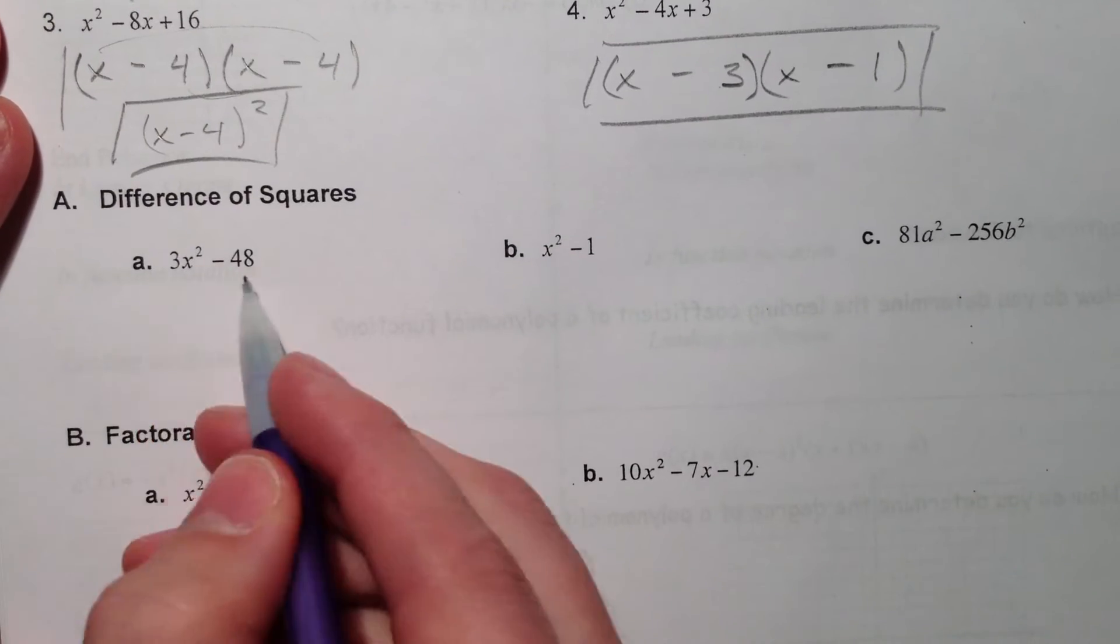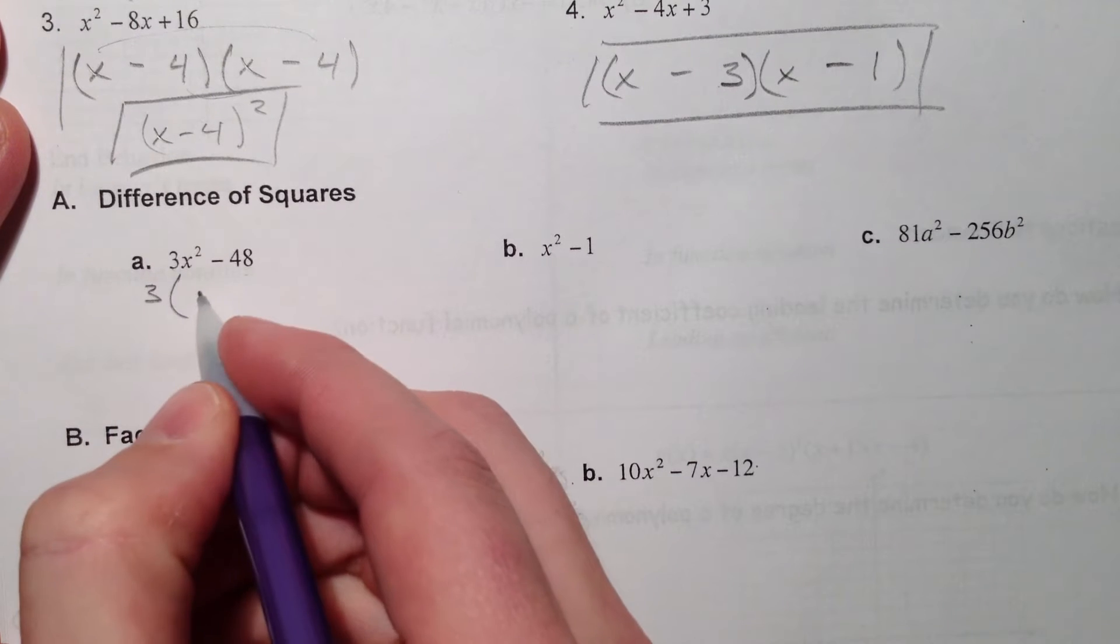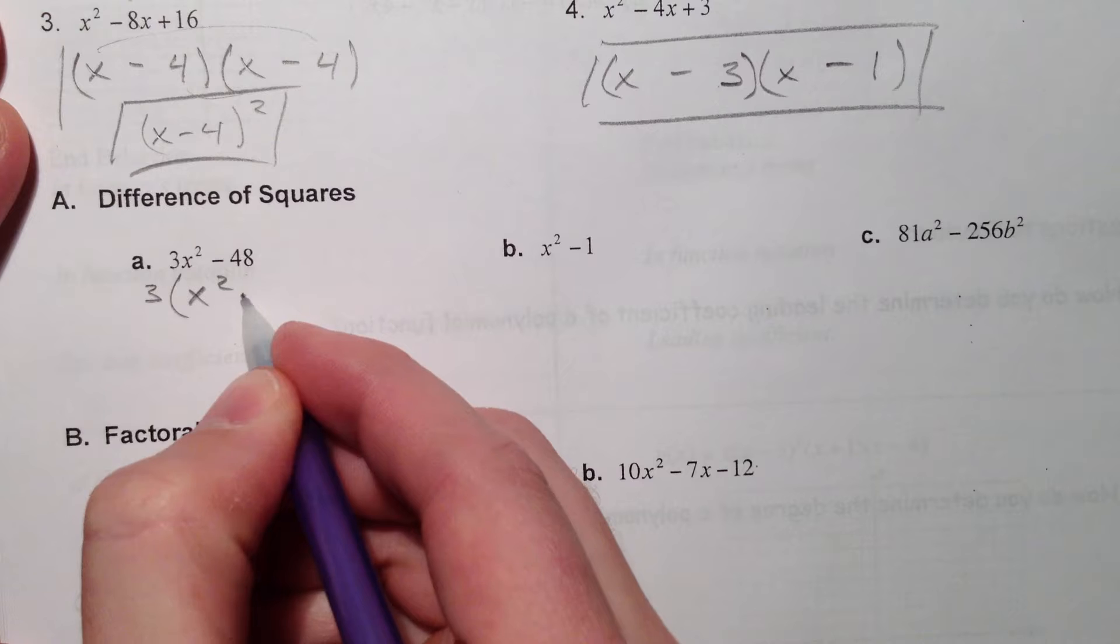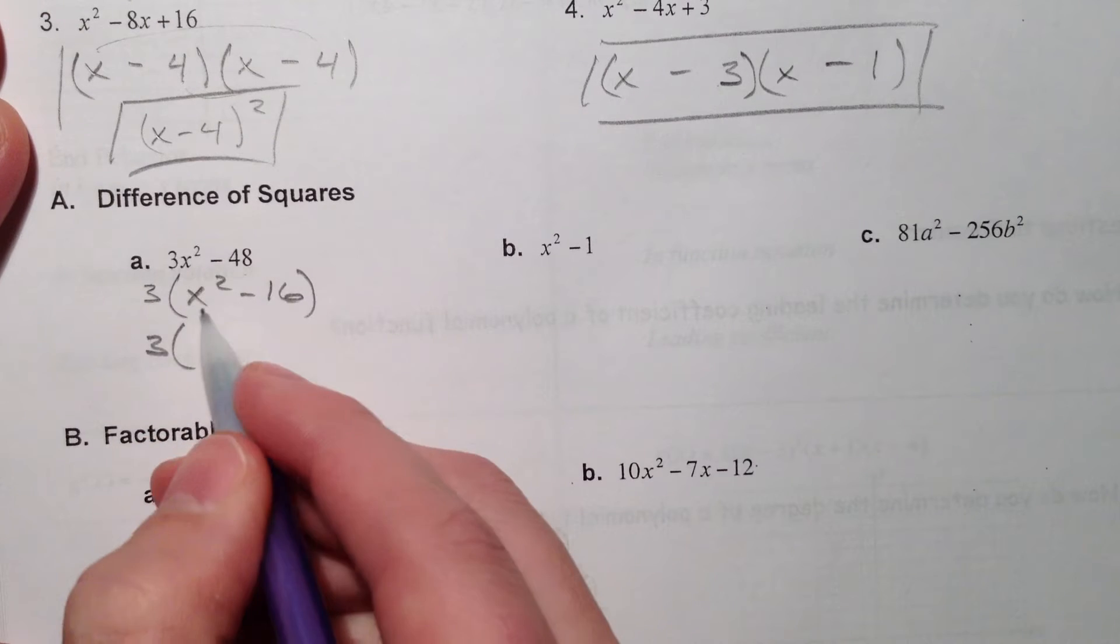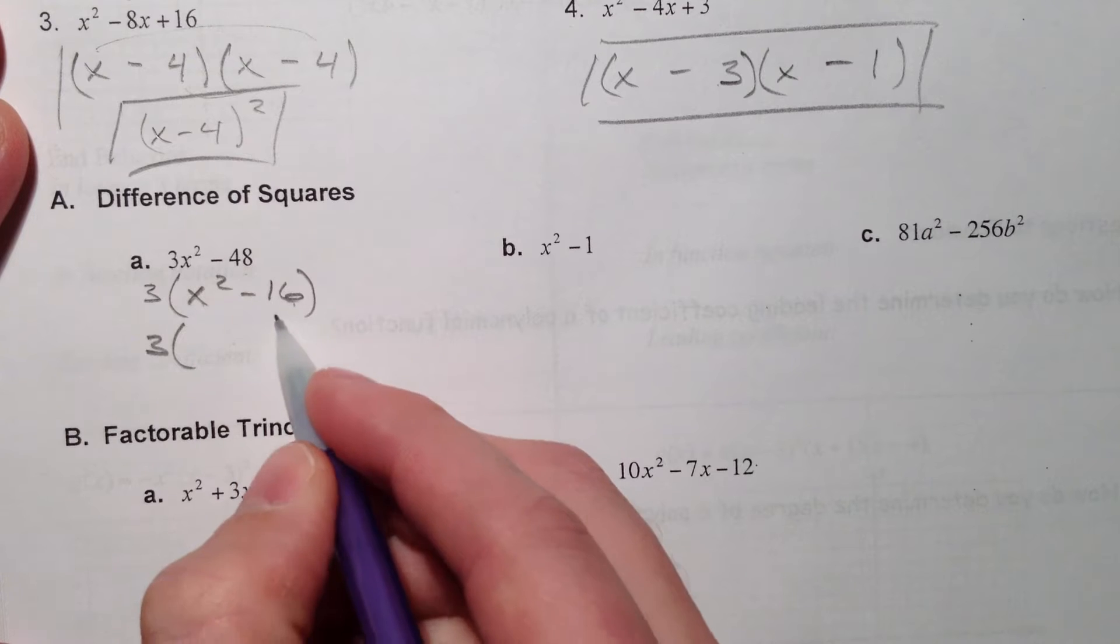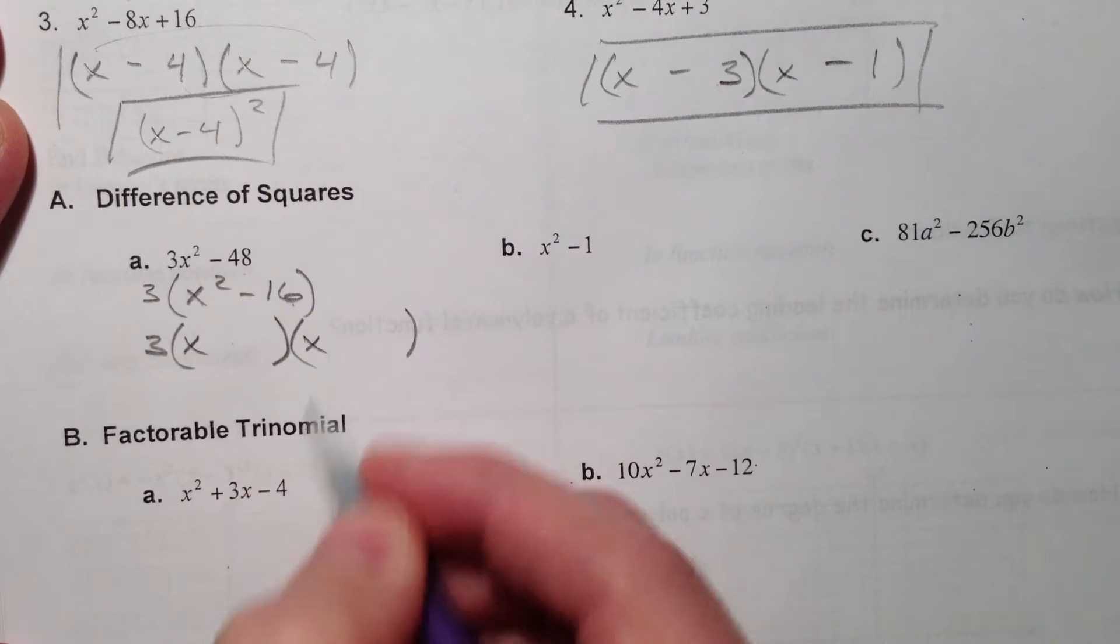Now, this one doesn't look like it's difference of squares, but we can pull a 3 out first. When you pull out a 3, you get x² - 16. And then something squared minus something squared. Anytime you do that, it's always going to be plus minus.